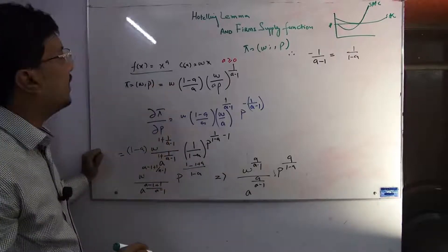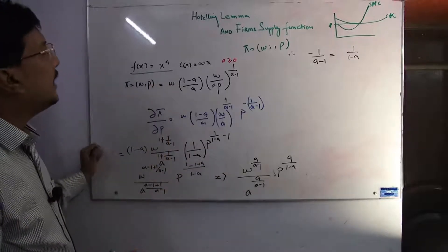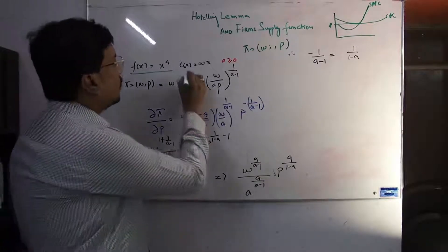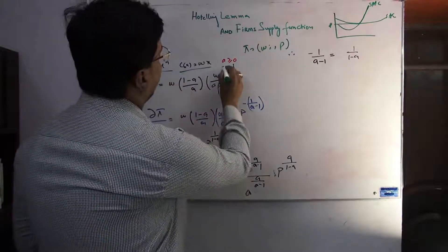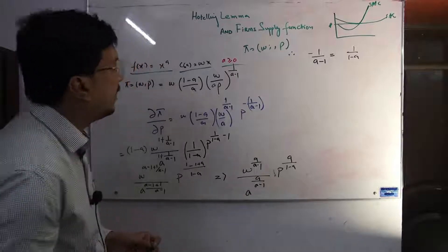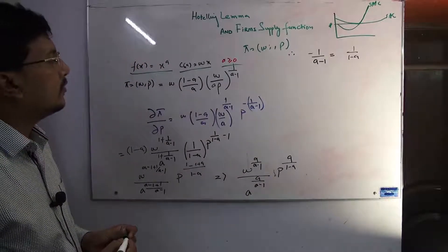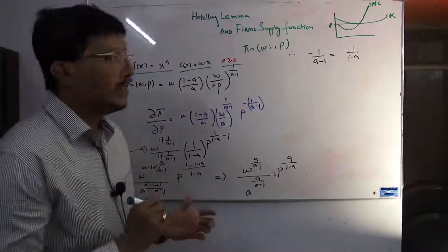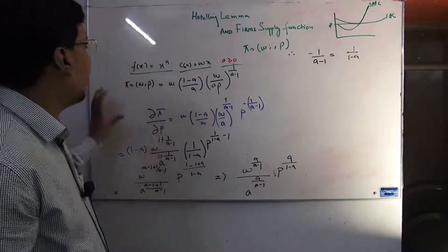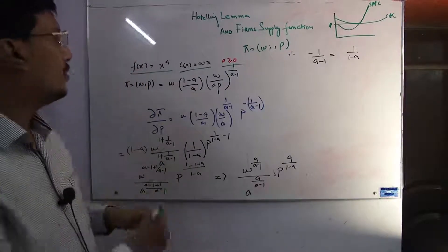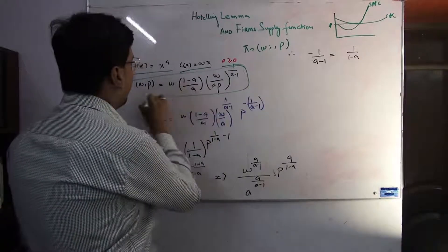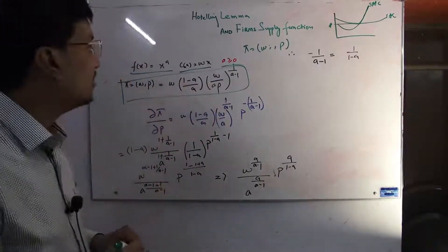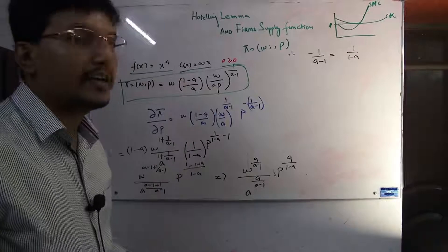The profit function: f(x) = x^a. This was a one-input short-run production function that we discussed. We put the condition that a is greater than or equal to 0. In previous lectures, we derived how the profit function was established. You can check those lectures. Now we move ahead.